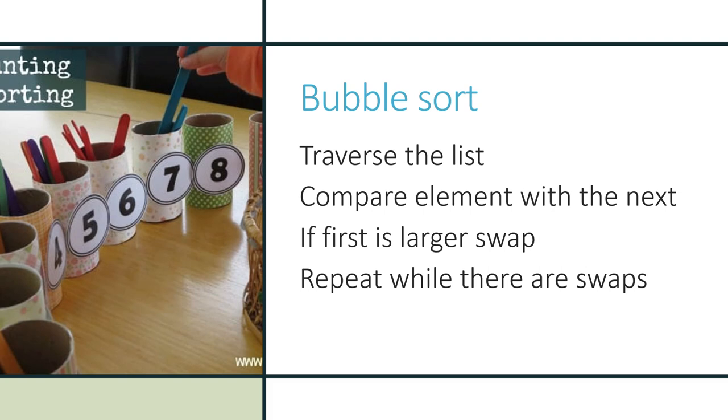Remember how the bubble sort works. We need to traverse the list, compare each element with the following element, and if the first element is larger, swap the values round and repeat this traversal and swapping over and over again until there are no more swaps.